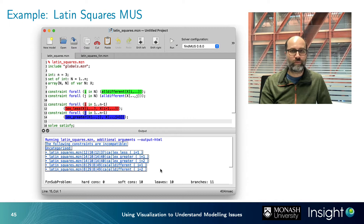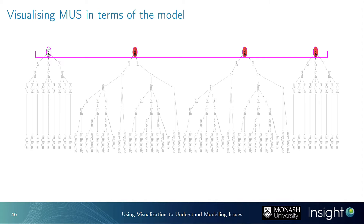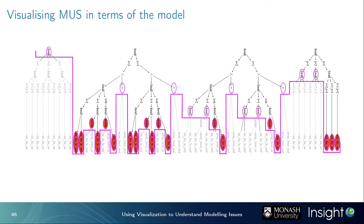Using grouping of constraints based on model-level structure, we can calculate MUSs more quickly and explain them at the level of the model the user wrote. This makes it much easier to understand what's going on and to translate the MUSs into something the end user or industrial client would understand.